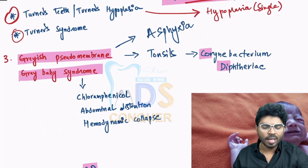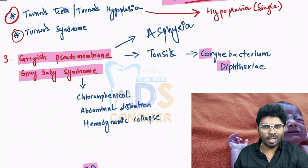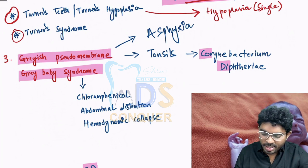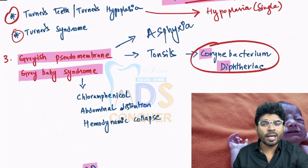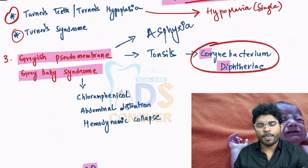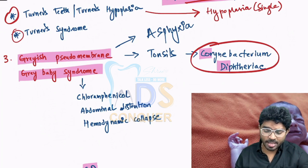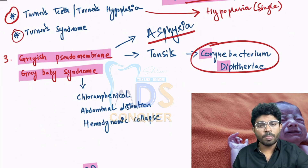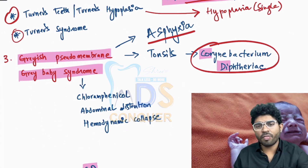Question number three is about gray pseudomembrane or gray to green color pseudomembrane, which is very difficult to remove. The answer is CD — Corynebacterium diphtheriae — where you will have a gray color pseudomembrane. In these patients, Corynebacterium diphtheriae causes an emergency situation basically due to asphyxia, as a thick gray pseudomembrane forms on the respiratory system, making them suffocate and requiring emergency airway management.